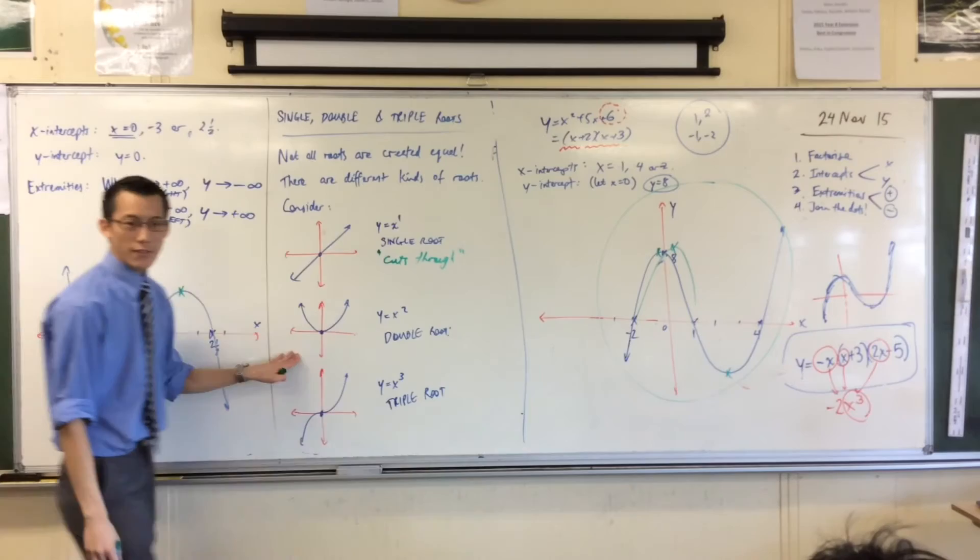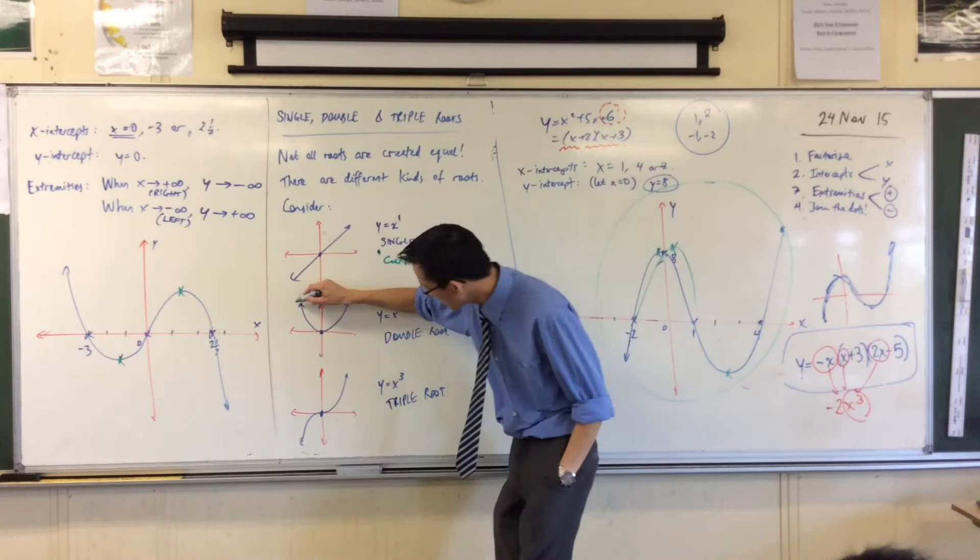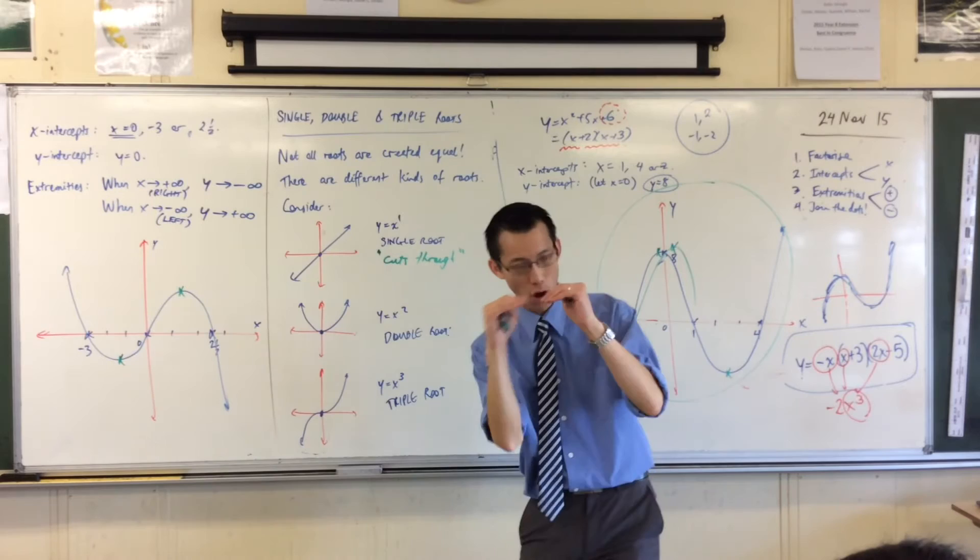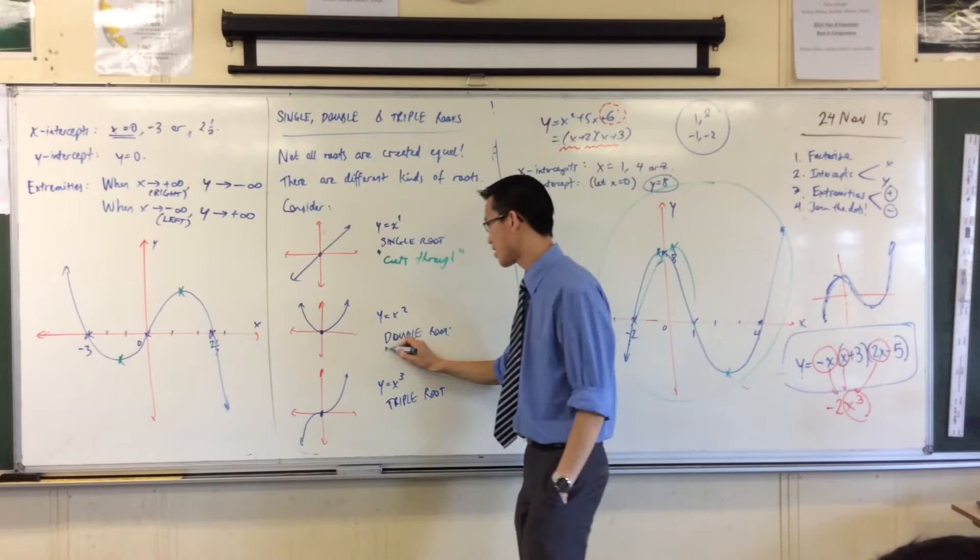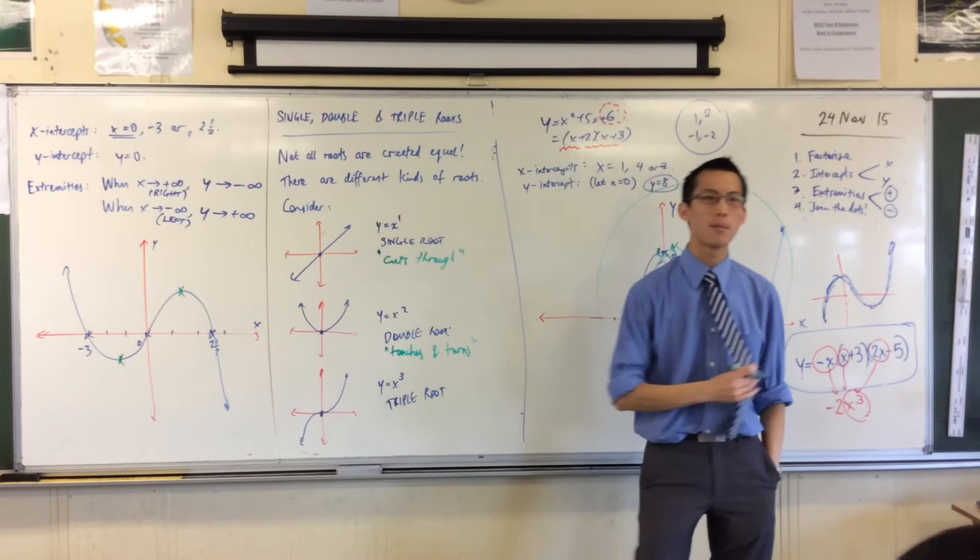Now, how would we describe verbally what's going on? I've got some words here that I hope will help you articulate what's happening. This root here, what is the graph doing as it passes through the root? Well, it just sort of cuts straight through the axis. Do you see that? It just slices right across. So in fact, that's the way I say it. It cuts through and keeps on going uninterrupted.